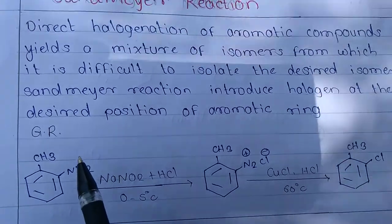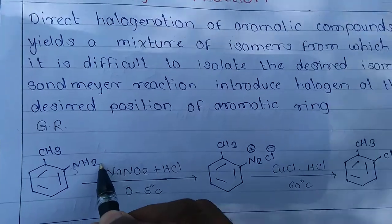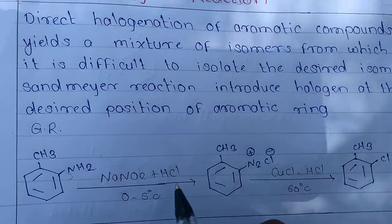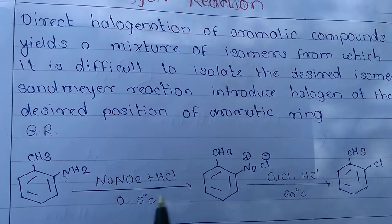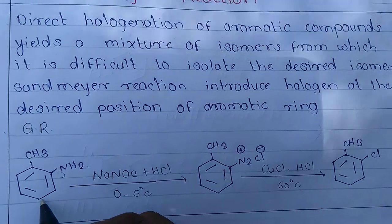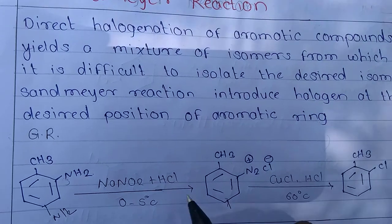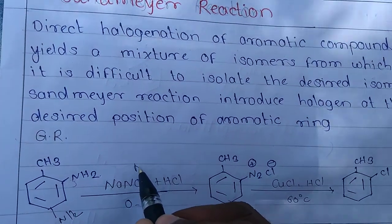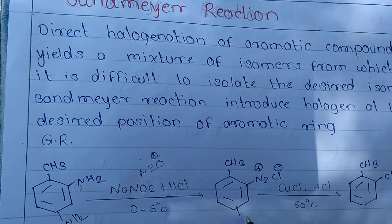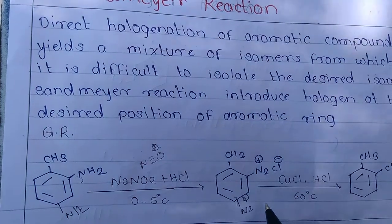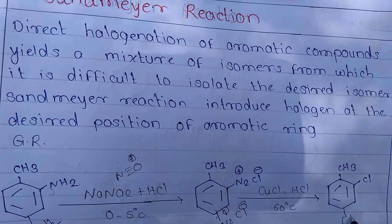For example, if the NH2 group is on the ortho position, then chlorine is introduced at the ortho position via this reaction. Similarly, if the NH2 group is on the para position, the diazonium salt N2+ Cl- is formed using NaNO2 and HCl, and the Sandmeyer reaction introduces Cl at the para position.